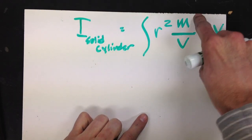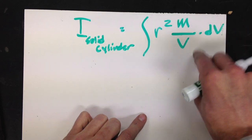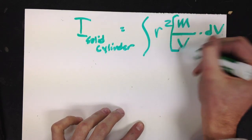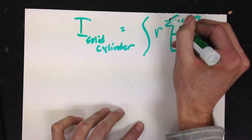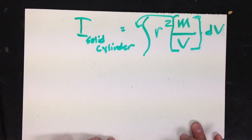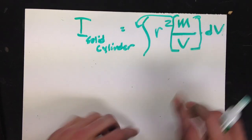Well, we are integrating total mass and total volume, which are both constants, which means I can take those out of the integral. So that leaves me with r squared dv.